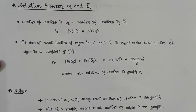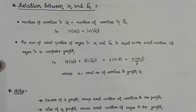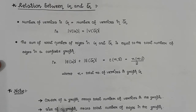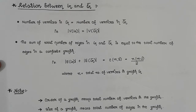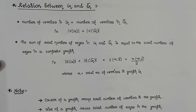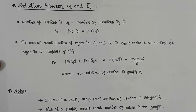Before we practice problems, you need to know these two terms. The first is the order of a graph, which means the total number of vertices in the graph. The second is the size of a graph, which means the total number of edges in the graph. These two terms are commonly used in exam questions, so you should be clear on them.